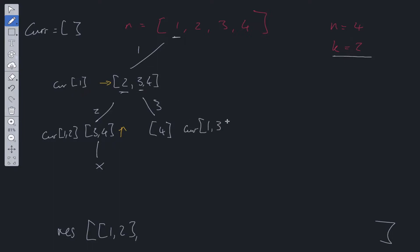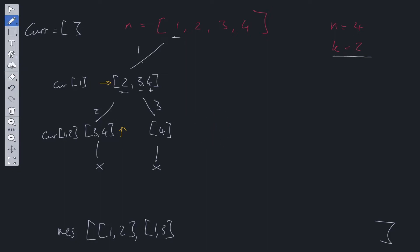We choose 3, leaving only 4. Current at this position is [1, 3]. We can't go further, so we push [1, 3] into results. We backtrack and find 4. Current becomes [1, 4], so we push that into the result array. We then backtrack up through the levels, finding no further positions to move across to.